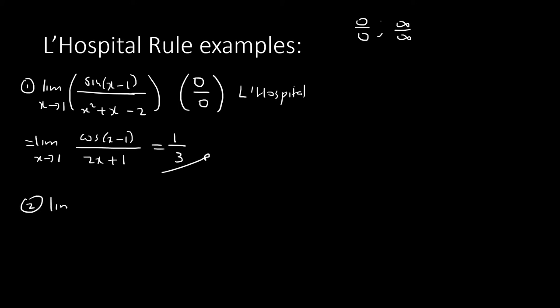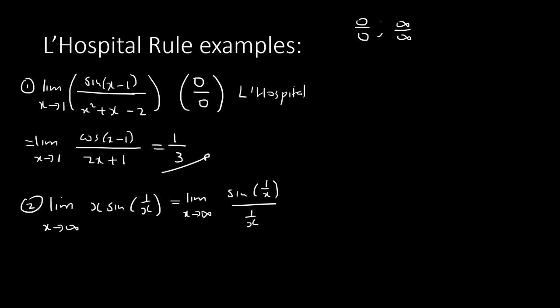Number two: limit as x→∞ of x·sin(1/x). Remember, make sure you have a fraction first. We rewrite this as sin(1/x) / (1/x) by moving x to the denominator. Now substitute: 1/∞ = 0, so sin(0)/0 = 0/0. That's our indeterminate form, so apply L'Hôpital.